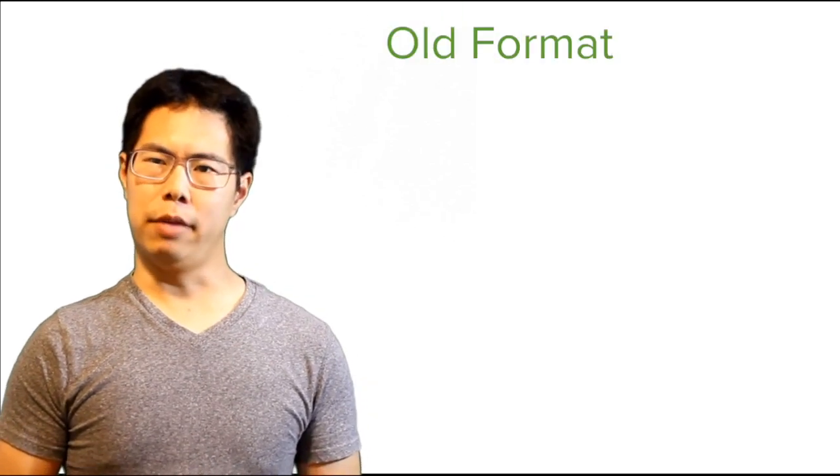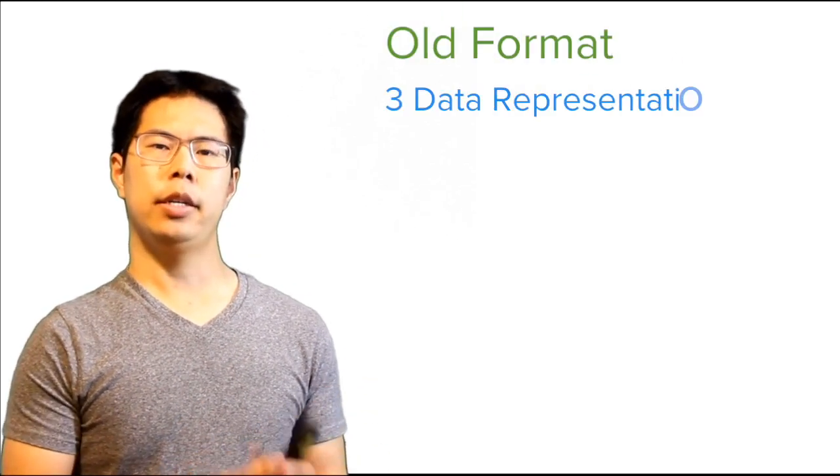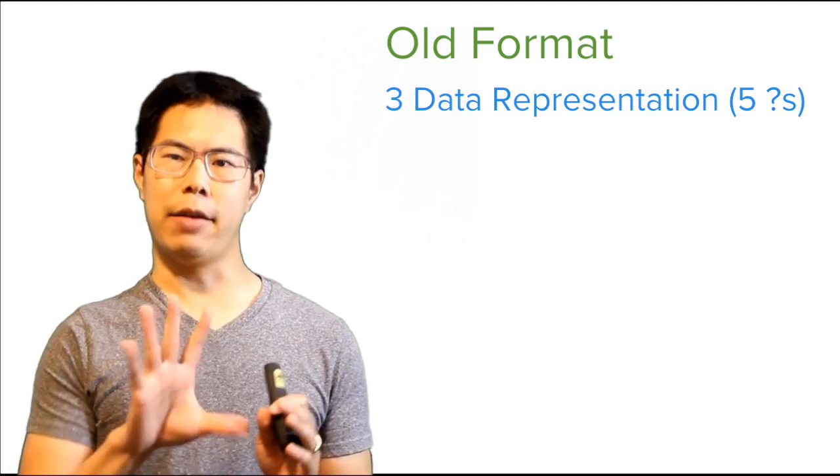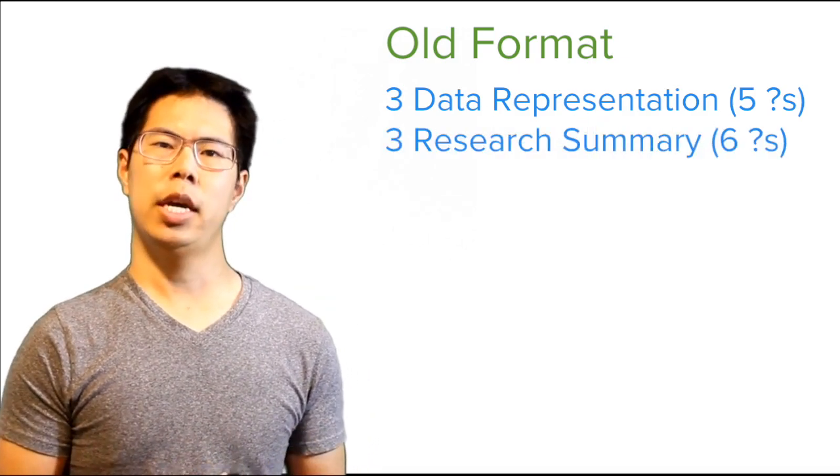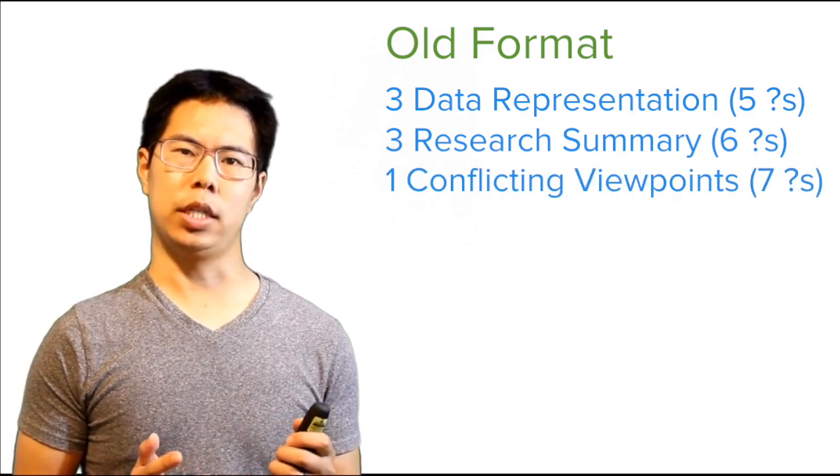Here's what the old format of the ACT Science Test looked like. There were three data representation passages of five questions each, three research summary passages of six questions each, and one conflicting viewpoints passage of seven questions.